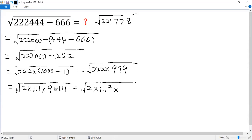So we get square root of 2 times 111 square. And 9 can be written as 3 square. So we get square root of 2 times 111 times 3. So the final answer is 333 times square root of 2.